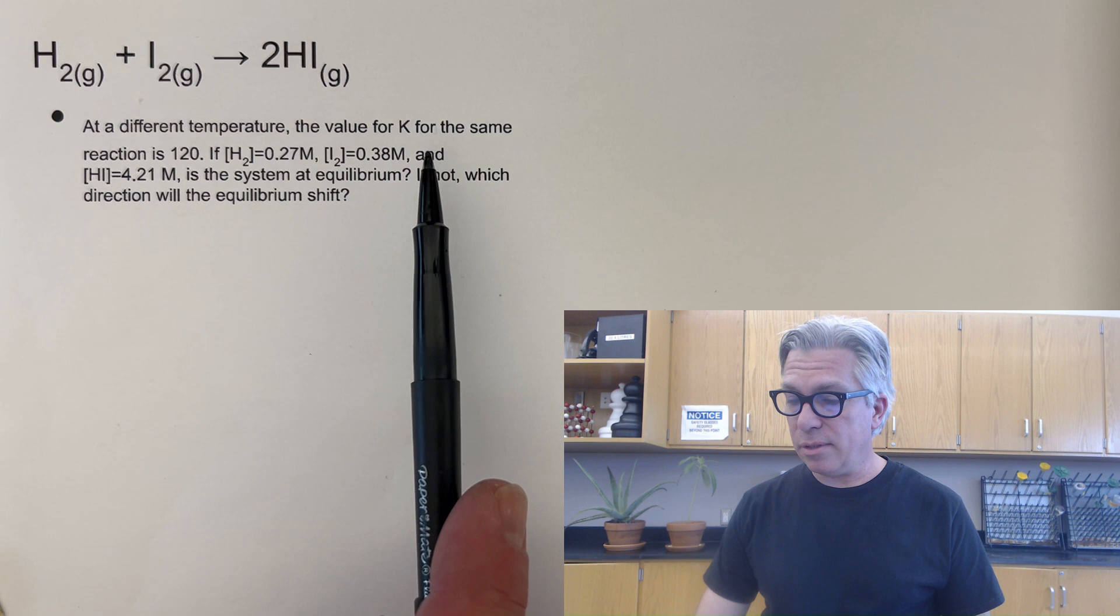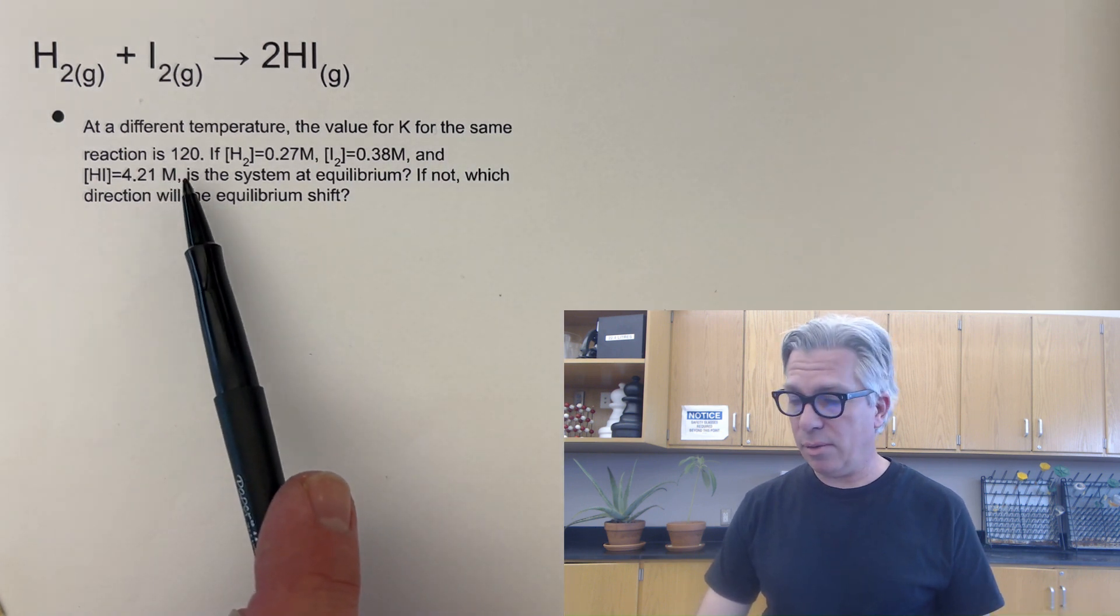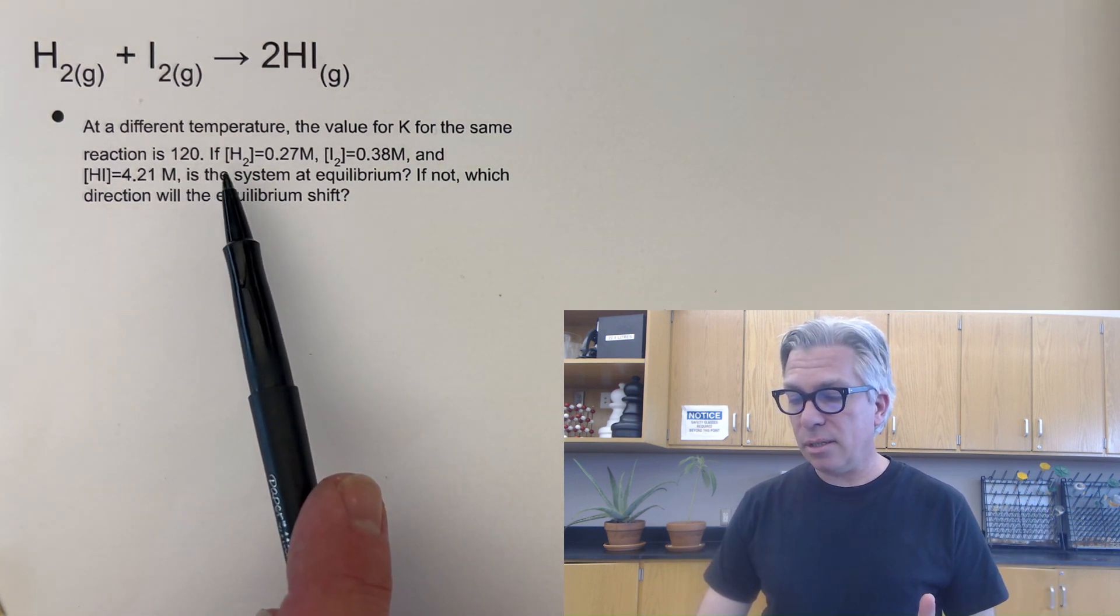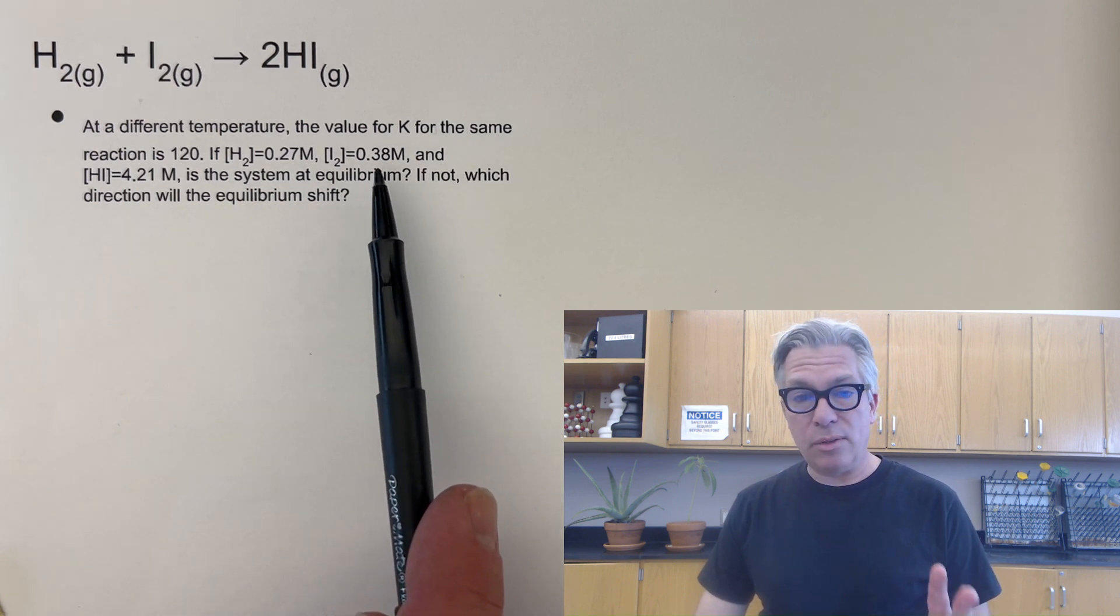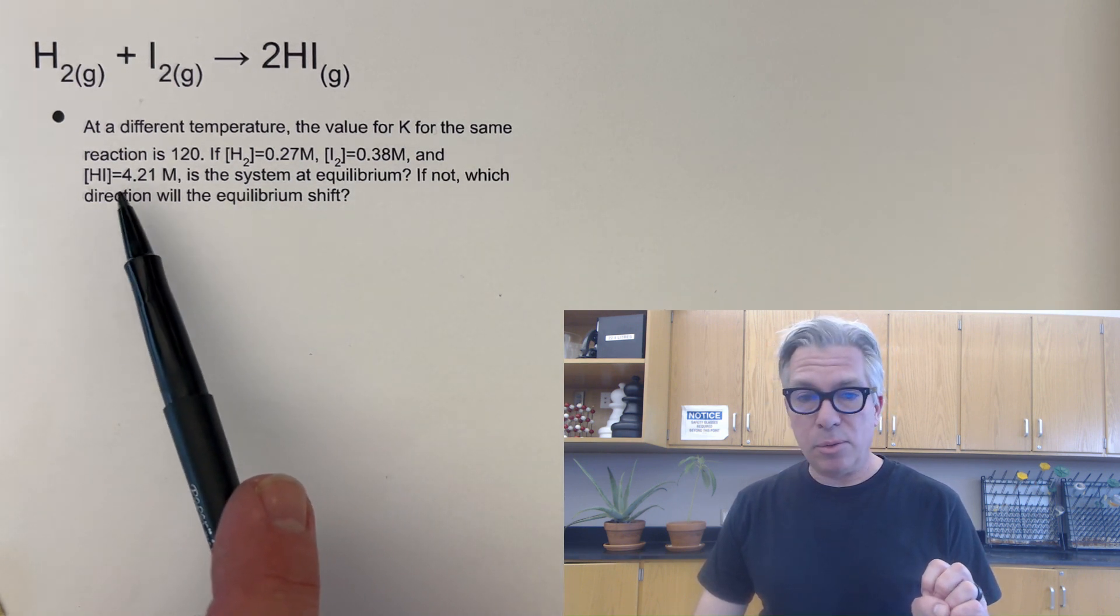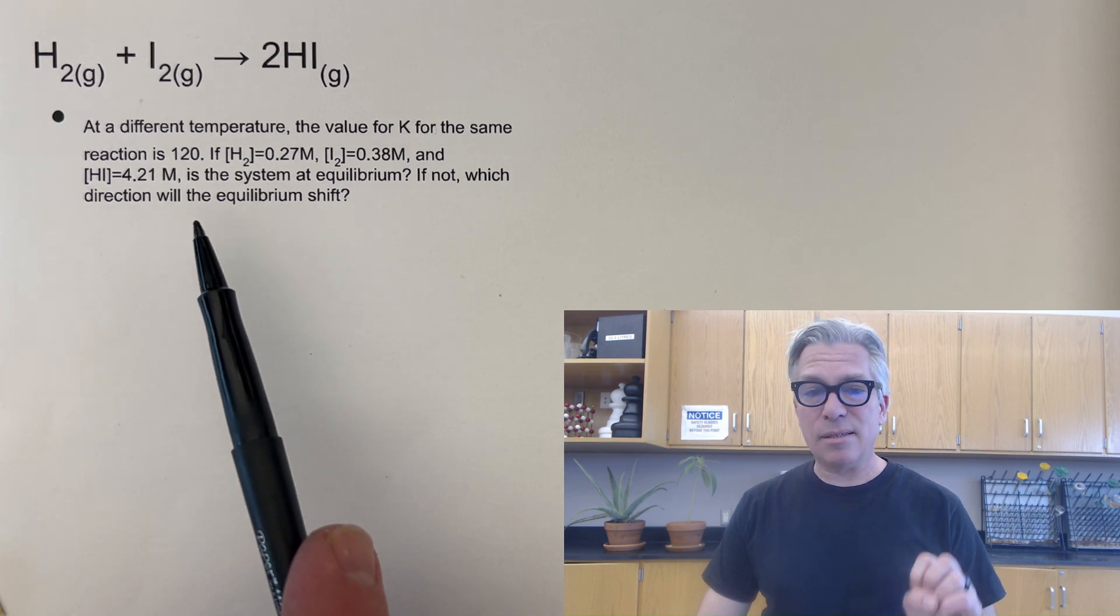at a different temperature, the value for K for the same reaction is 120. We saw that once already. If the hydrogen concentration is 0.27, and the I2 concentration is 0.38, and the HI is 4.21 moles per liter, is the system at equilibrium?